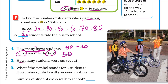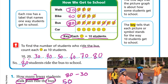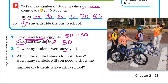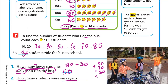How many students were surveyed? That means he needs the total number of all students. Let's see how many go by car: ten, twenty, thirty, forty, fifty, sixty. So we need to add all of these: 30 plus 40 plus 80 plus 60.